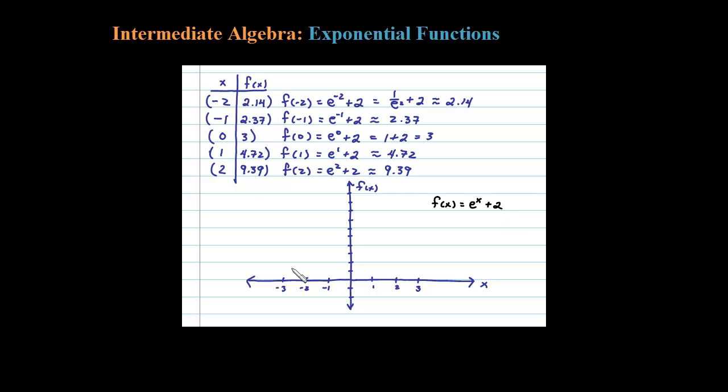So let's go ahead and plot the points. So negative 2 comma 2.14, don't worry about being too perfect. Negative 1 comma 2.37, my y intercept here 0 comma 3, 1 comma 4.72, and 2 comma 9.39. So you can see the general shape, the exponential growth like that.